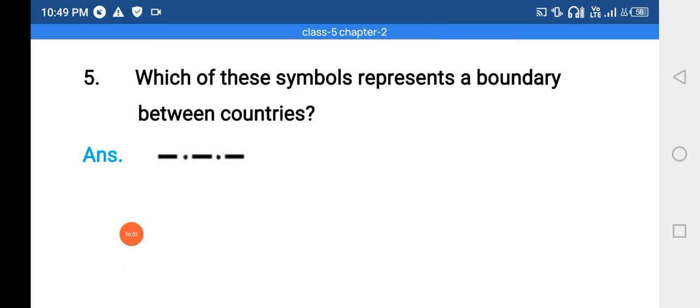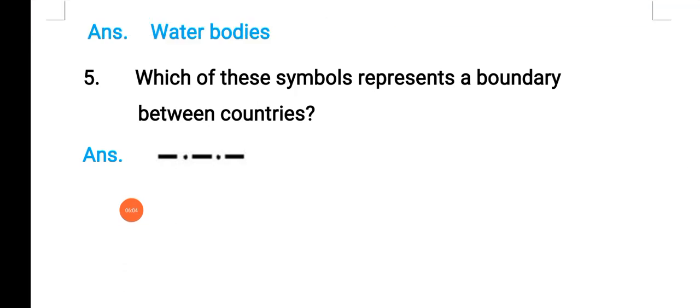Blue color in a map always shows water body. Dark blue color shows deep water, light blue shows shallow water. Which of this symbol represents the boundary between countries?